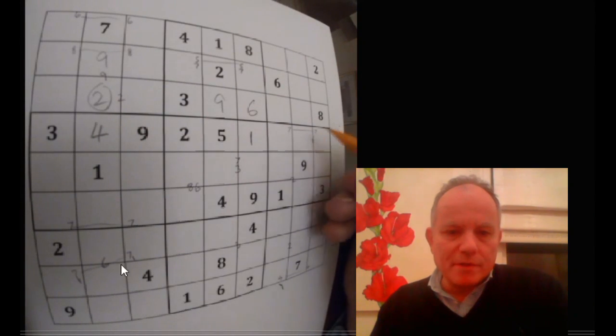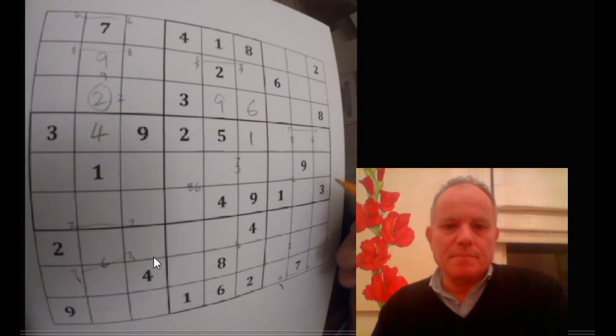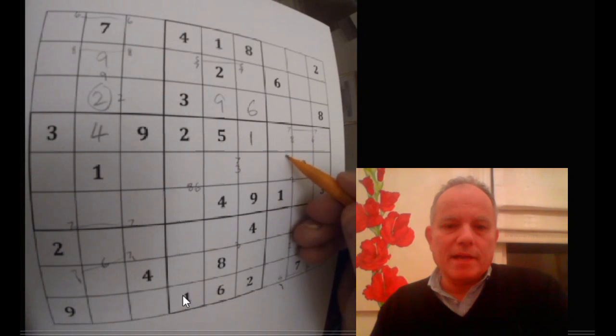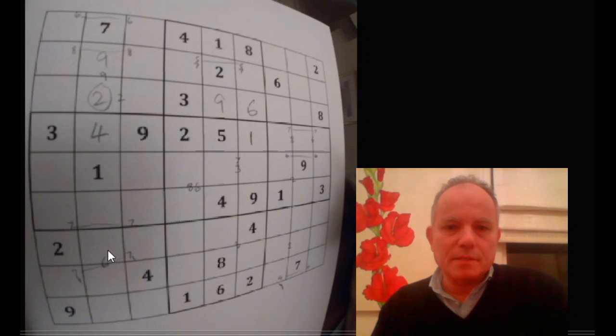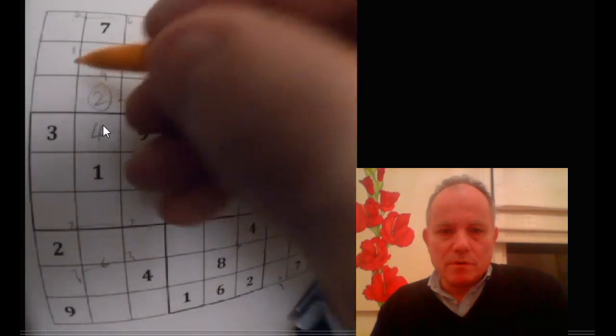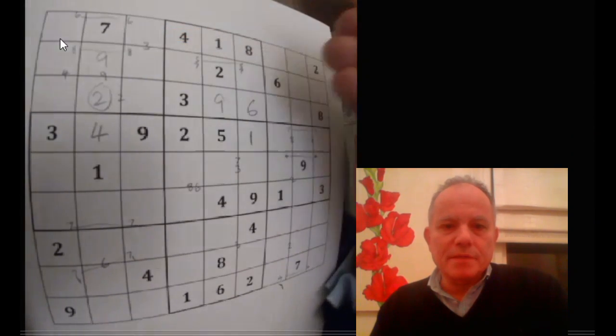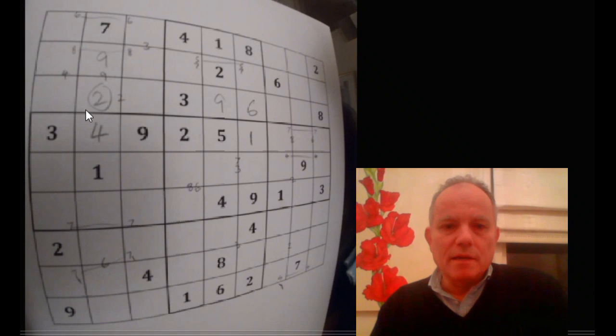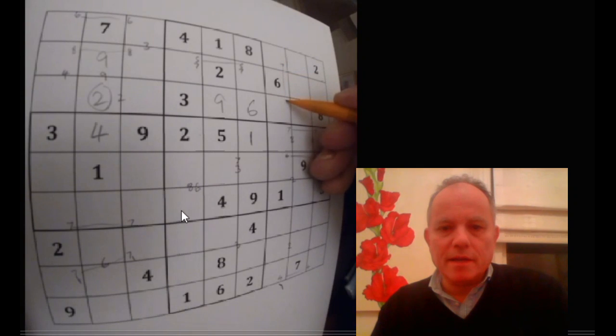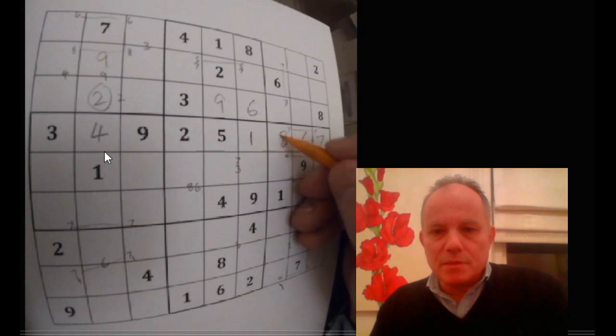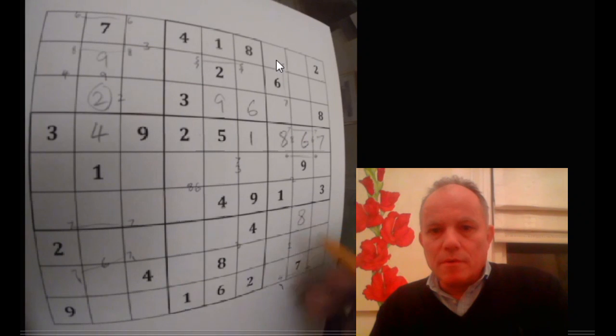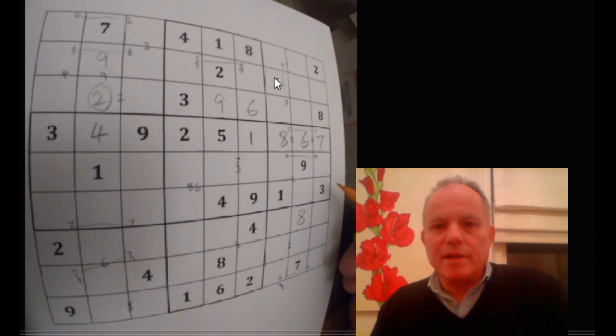Frustratingly, I am a bit slow here solving this. When I actually did it on paper the first time I was quicker than this video. Now that seven-one pair is very useful. It rules out those two cells for something like the six, and that six here rules out those two cells, so six has to be there.